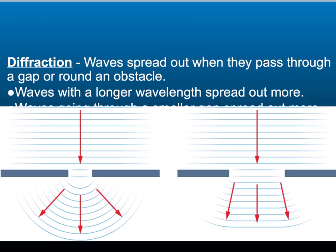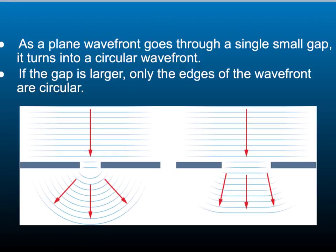As radio waves are a type of wave, they can experience diffraction. Waves spread out whenever they pass through a gap or around an obstacle — this is called diffraction. In general, the smaller the gap or the longer the wavelength, the stronger the diffraction. Waves with longer wavelengths passing through small gaps spread out more than waves with shorter wavelengths passing through wider gaps. As a plain wave front goes through a single small gap, it turns into a circular wave front. If the gap is larger, then only the edges of the wave front are circular.